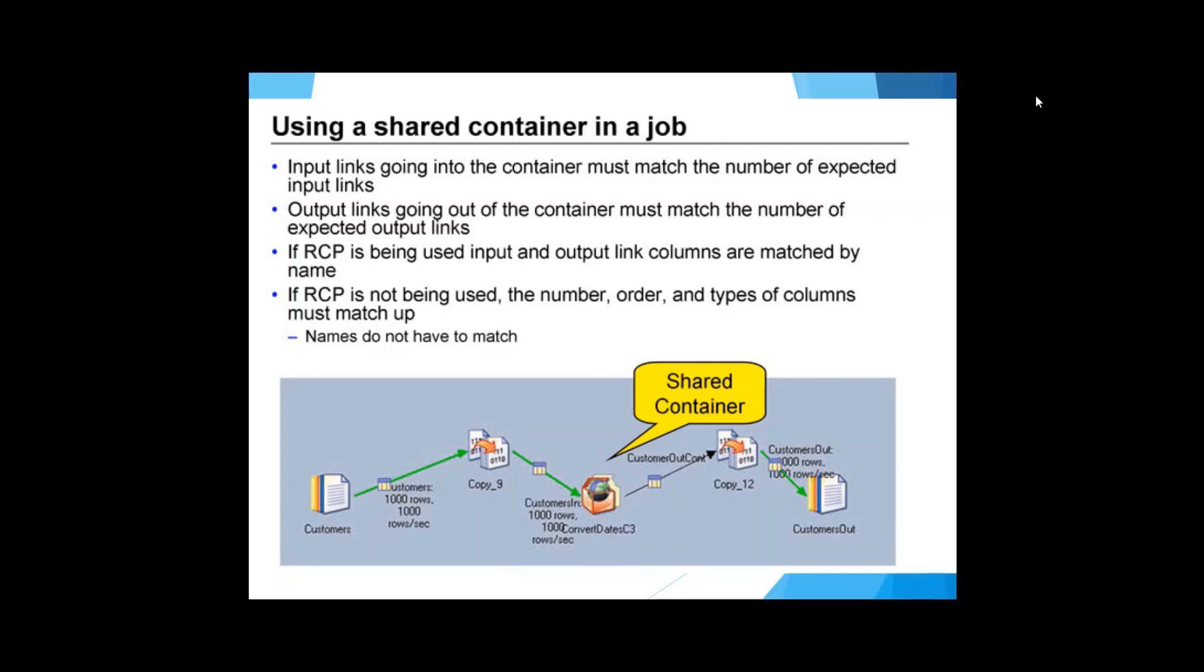One thing to remember is that the number of input links and the output links coming from a shared container must match the input and output links in the DataStage job which is calling the shared container. You can also use the option to have RCP enabled in a shared container, and that is very useful when you want to make it more reusable. Even if the structures are a little different of the different DataStage jobs which are calling the same shared container, you can use RCP and make use of the common functionality.